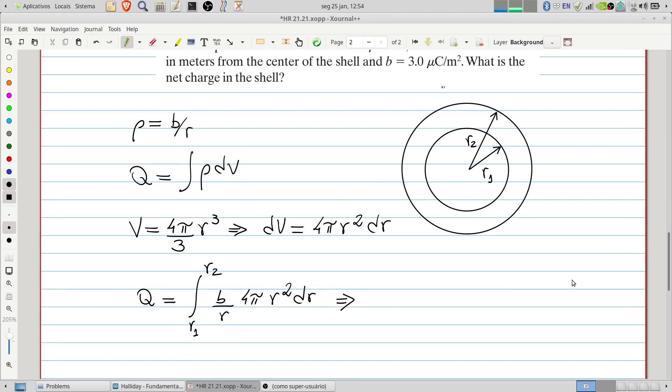And here we will have the charge will be, here we have 4π times b, integrated from r1 to r2, and we can cancel here, we have r dr.